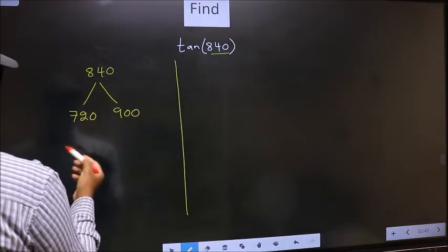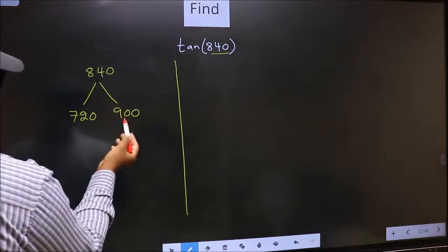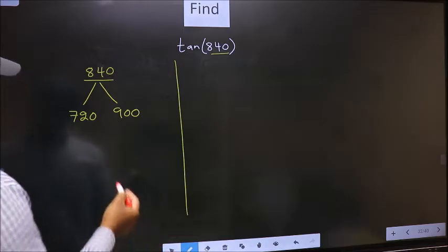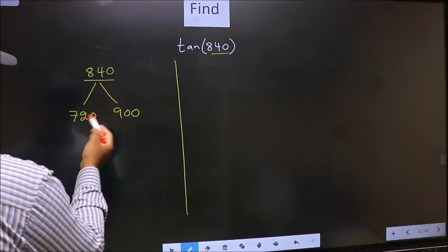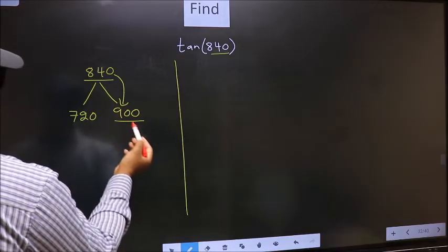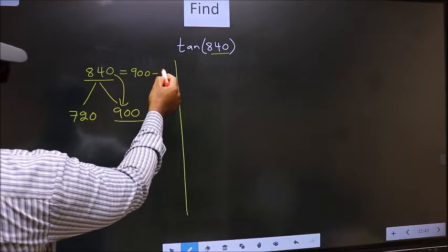This is 180 into 4, and this is 180 into 5. Between these two numbers, 840 lies. Next, 840 is close to which number? This is close to 900, so in place of 840 now we should write 900 minus 60.